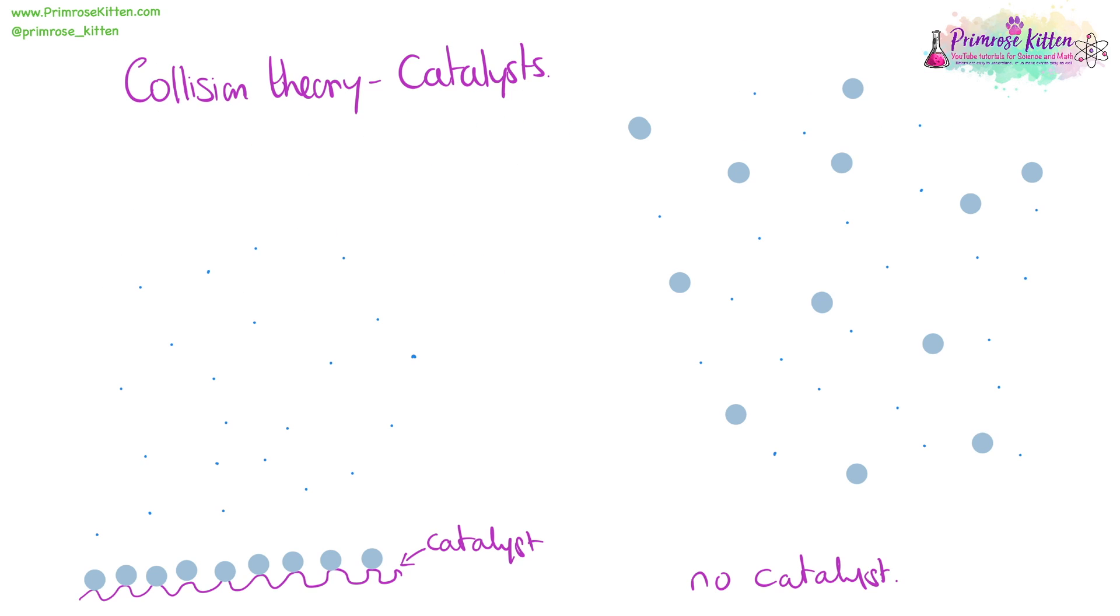When we have a catalyst, it's something that makes a reaction easier to happen. It lowers the activation energy. So for example, this catalyst fixes one of the reactants in place, so that it's easier for the other reactant to find it, whereas over this side, they're both randomly wandering around in the dark, and it's quite hard to find people when you're wandering around in the dark.